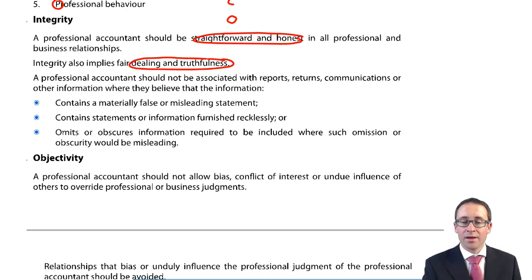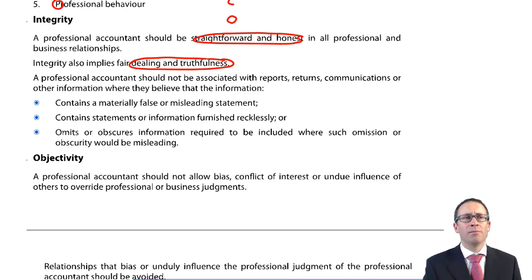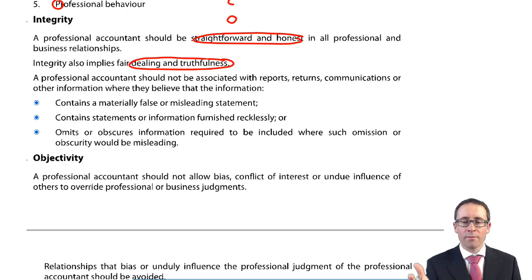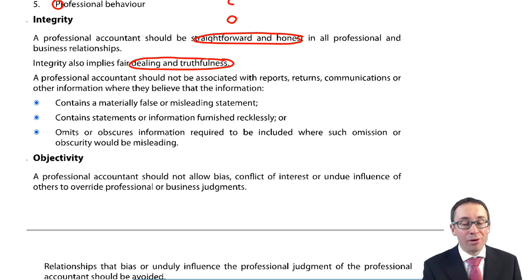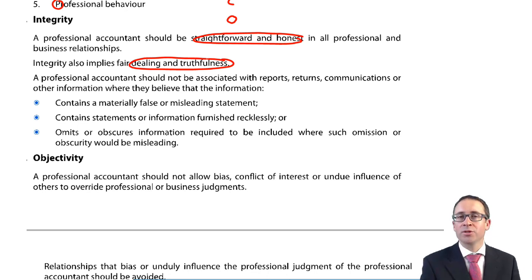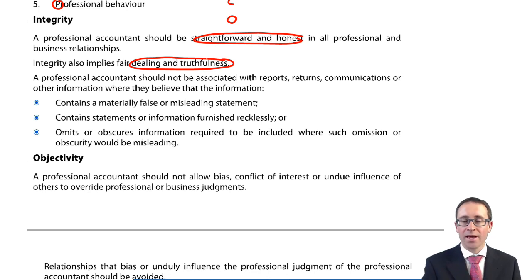If information has been gathered recklessly — maybe you shouldn't have access to it but by chance you do — don't take any of that information on board, as you are not acting with integrity. If something is omitted deliberately, don't put your name to it; make sure it is included. Integrity is all about honesty, fairness, and straightforwardness.